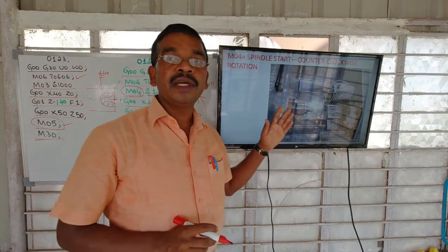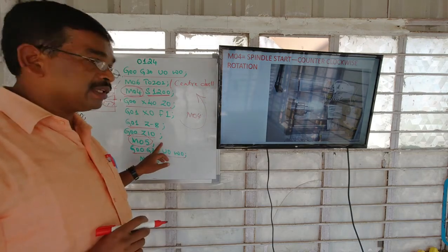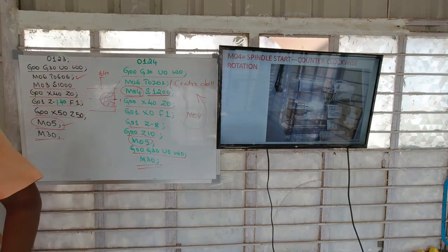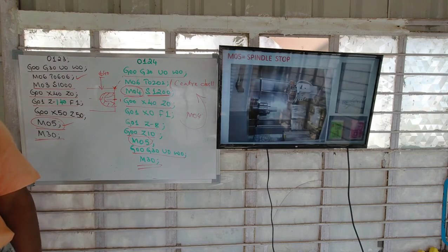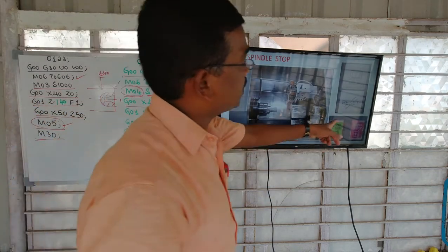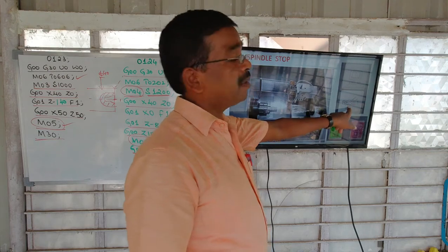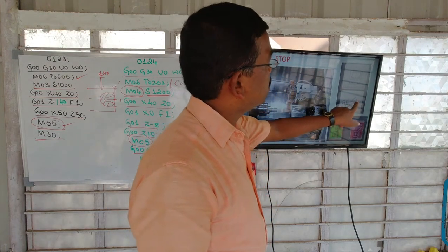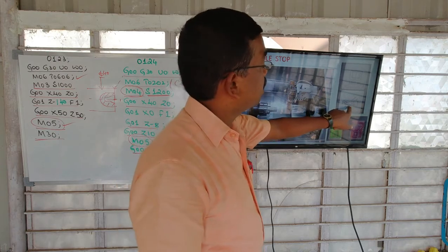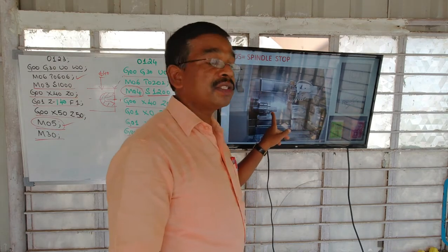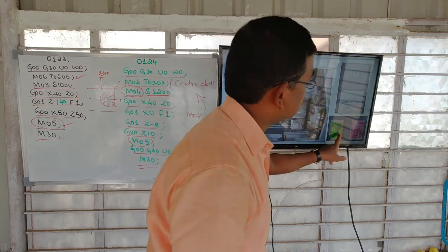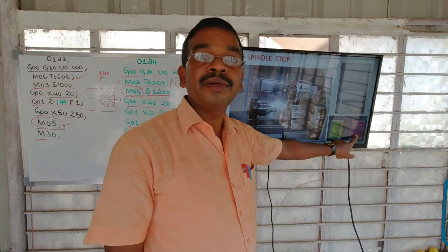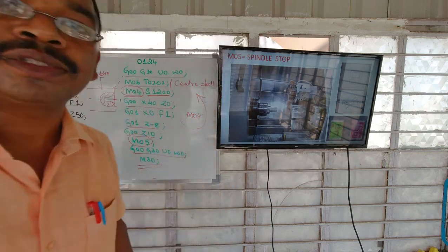For stopping the workpiece, we have to give M05 in the program. For manually stopping, we have other commands also. If we press the reset button at the operator panel or machine control panel, the rotating spindle will stop. We can also stop the spindle rotation by using the hard key on the panel. Thank you very much.